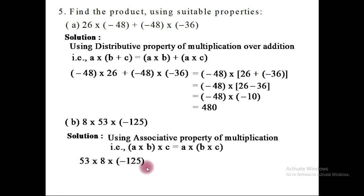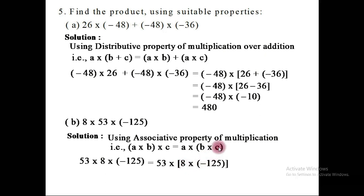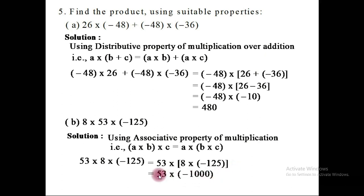So this expression will be arranged in the form of the right-hand side of the associative property: 53 into the product of 18 and minus 125. Here A is 53, B is 18, and C is minus 125. The reason we rearrange in this order is that multiplying 18 into minus 125 gives minus 1000, so multiplication by 1000 is easy. So 53 multiplied with minus 1000 gives minus 53,000.